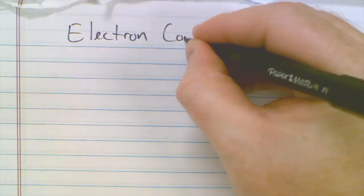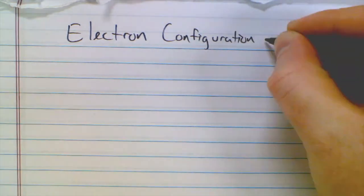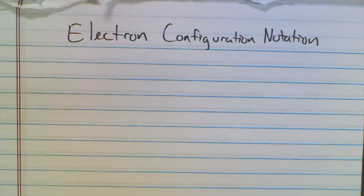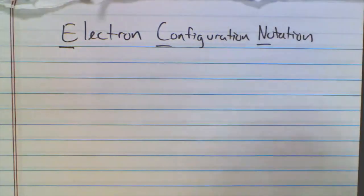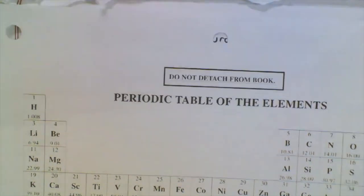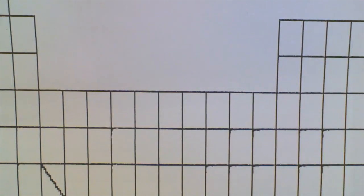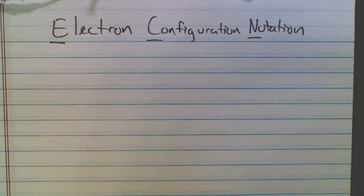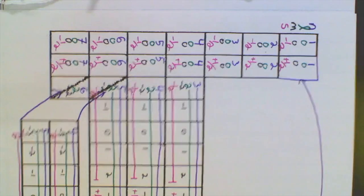Today you're going to be taking notes on electron configuration notation. This expands upon the material we talked about yesterday with quantum numbers. We'll abbreviate this ECN. You're going to want to have out a blank periodic table, another blank periodic table similar to the one we filled in yesterday with quantum numbers, and that table of quantum numbers just for reference.